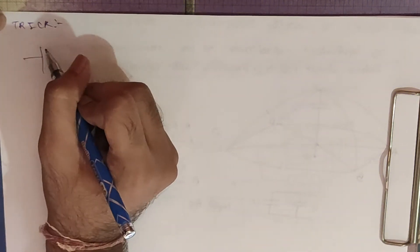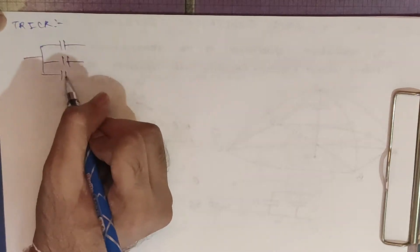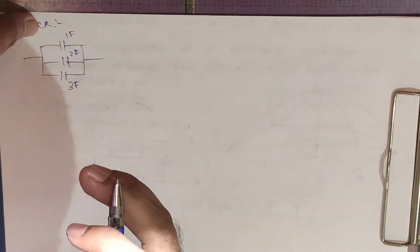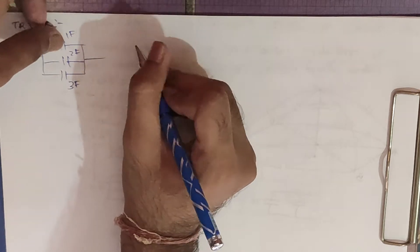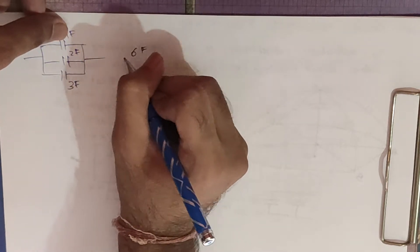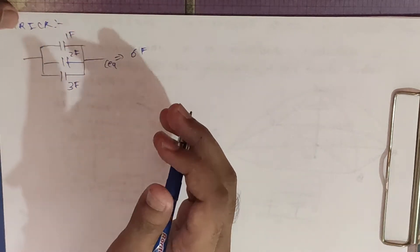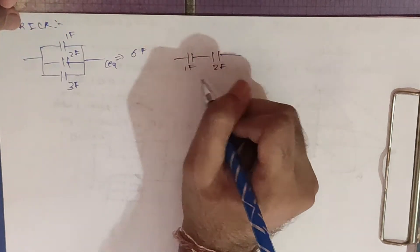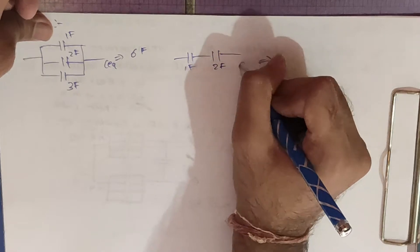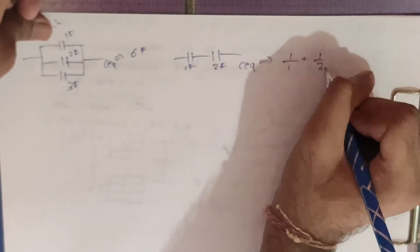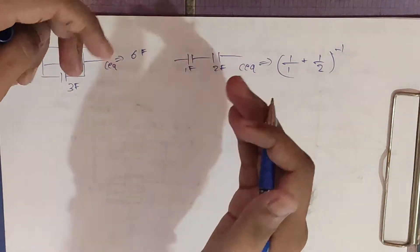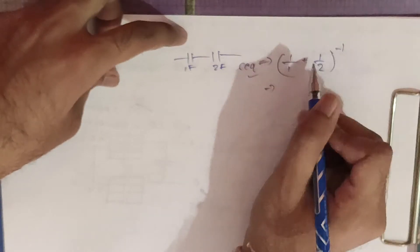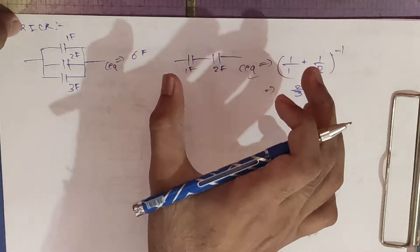When you have capacitance in parallel with values in farads, you simply add them — so 1F, 2F, and 3F in parallel gives 6F. When capacitance is in series, you use the parallel resistance formula: 1 over C_eq equals 1/1 plus 1/2, so C_eq equals 2/3 farad.